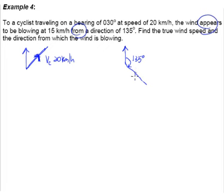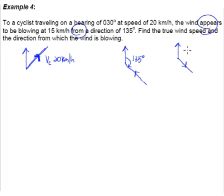This is a very common mistake. From the direction of 135 doesn't mean that the wind is blowing in a direction of 135. This happens when they tell you the wind is blowing in a direction — so you have to be really careful when you read the question. 'In a direction' or 'from a direction' is very important here, because the moment your arrow is drawn wrongly — facing the wrong way — everything is going to be wrong: your vector diagram, your answer, everything.